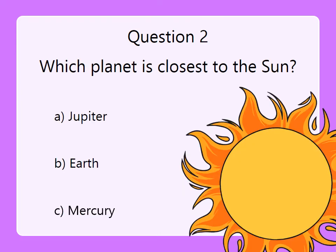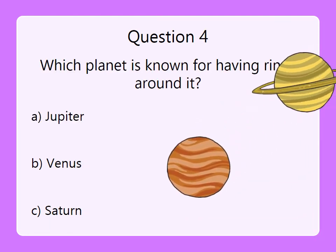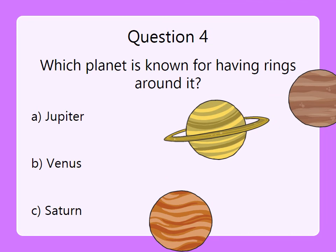Question two: which planet is closest to the sun? If you answered Earth, you are correct. Question three: what is the sun? If you say a star, you are correct. Question four: which planet is known for having rings around it? And if you say Saturn, you are correct.